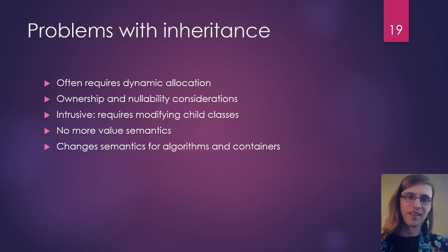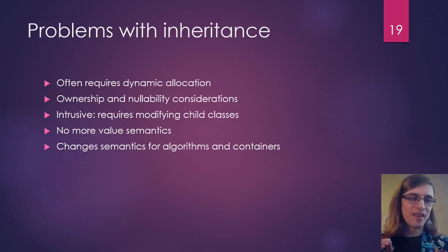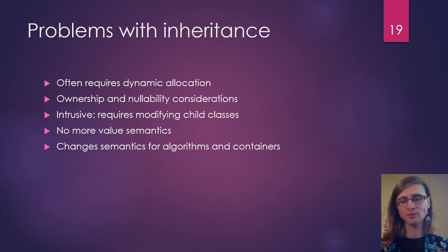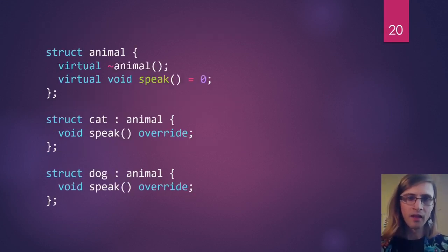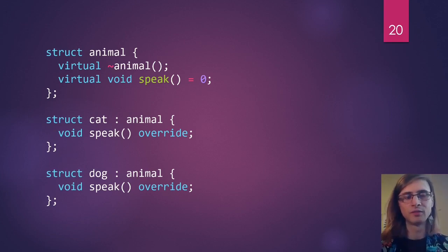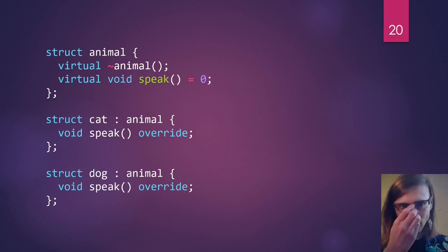Throughout this talk, I'm going to come back to this list and try to solve all of these problems. We're going to solve it by essentially implementing inheritance and virtual functions from scratch by hand. The technique is usually called type erasure. This is the hierarchy we're going to implement by hand: an animal class with a virtual destructor and one virtual member function called 'speak', and cat and dog which override speak.